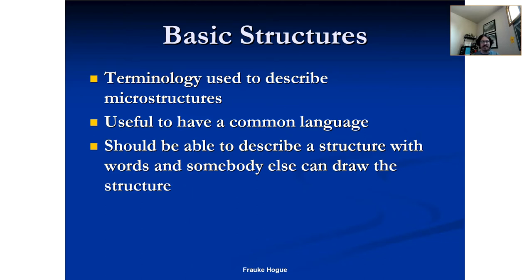Hoag is very old school about this — I don't believe I've come across elsewhere being told I should be able to describe a microstructure so clearly someone else can draw it. But basic structures: you should be able to describe it to someone else so they can draw it. That's actually kind of cool. We're going to talk about different types of structures. This may be a review for some of you, but it never hurts to see this stuff again.